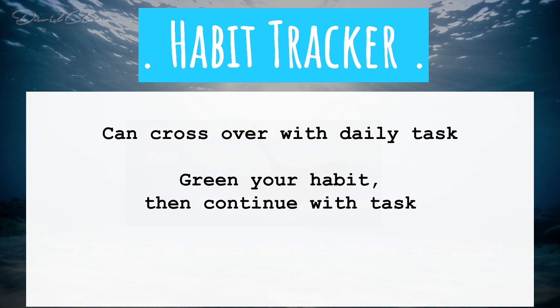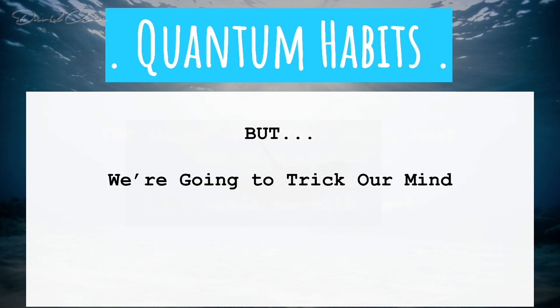Your daily habit can overlap with your main task. If your main thing is writing your book, make your habit writing for 20 minutes a day — mark it green, then continue writing until you check that one thing off your action item list. Here's a trick for the habit tracker: instead of tackling a big habit like writing for 20 minutes or an hour, use the two-minute rule from 'Atomic Habits.'